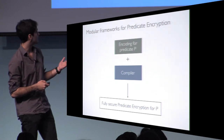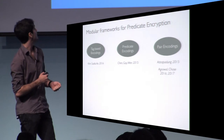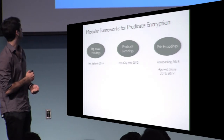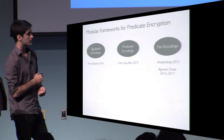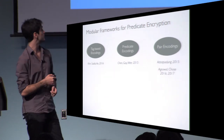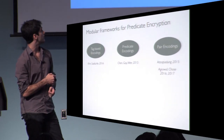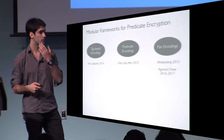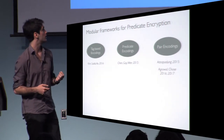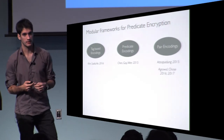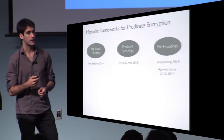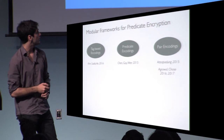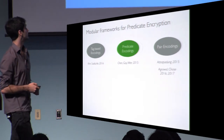Currently there are three kinds of encodings with different predicates. There are tag-based encodings, where the compiler is more efficient and saves some group elements. Then we have predicate encodings, which is what this talk is about. And pairing encodings, which are more expressive because they admit a computational notion of security, while the other two are only defined for an information-theoretic notion of security. Some improvements have been made by Agraval and Chase, which I will mention later.